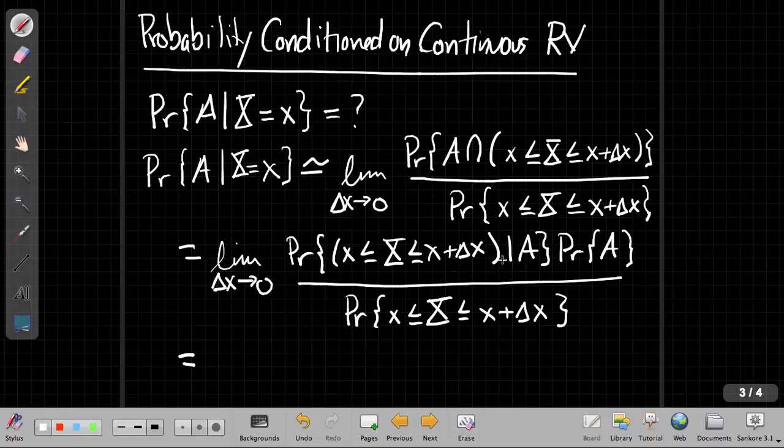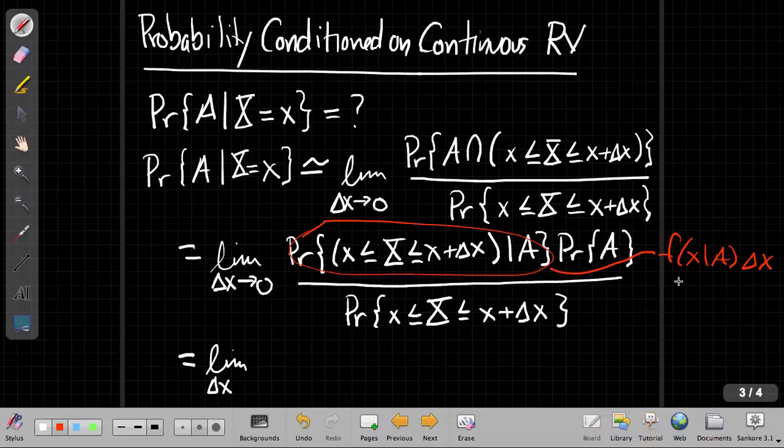I can approximate this probability by a density times delta x, right? We say that if things aren't changing too much, we saw I can rewrite this term here, I'm going to rewrite this as some, this is approximately equal to f of x given A times the width of the interval, right? So we say the probability, which is the area under this thing, or this probability can be written as the area under this times delta x if this interval is so narrow that this isn't changing much.